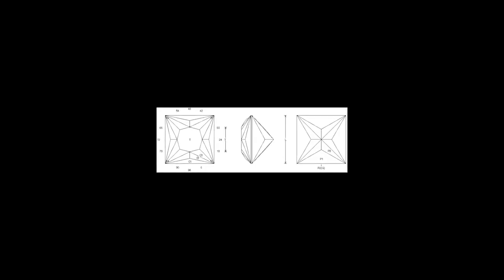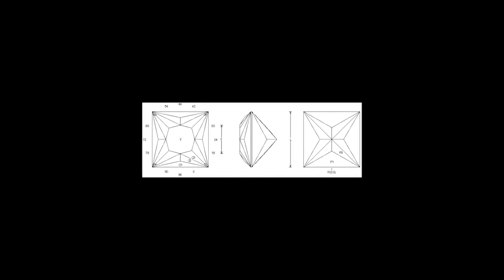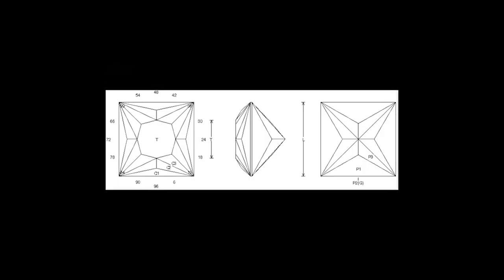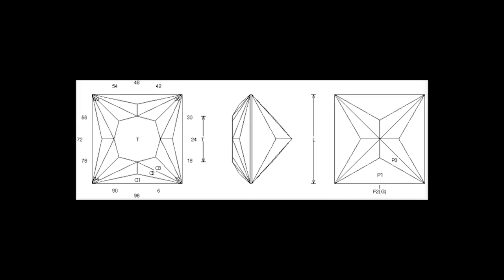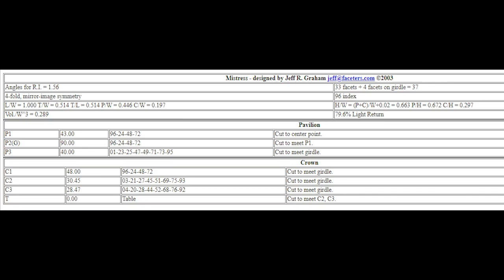Based on the shape of this piece of rough, I've decided that a square or princess shaped gemstone design would work best. So I've selected a gem design called Mistress by the late Jeff Graham. And here's what Mistress should look like from the top, the side, and the bottom when I'm finished cutting and polishing this gemstone.